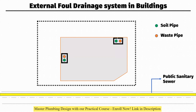So we use sanitary manholes to discharge the waste from the building stacks — the vertical pipes that you are getting from outside the building. We use sanitary manholes to collect the waste, and from the manholes we discharge the waste to the public sanitary sewer.